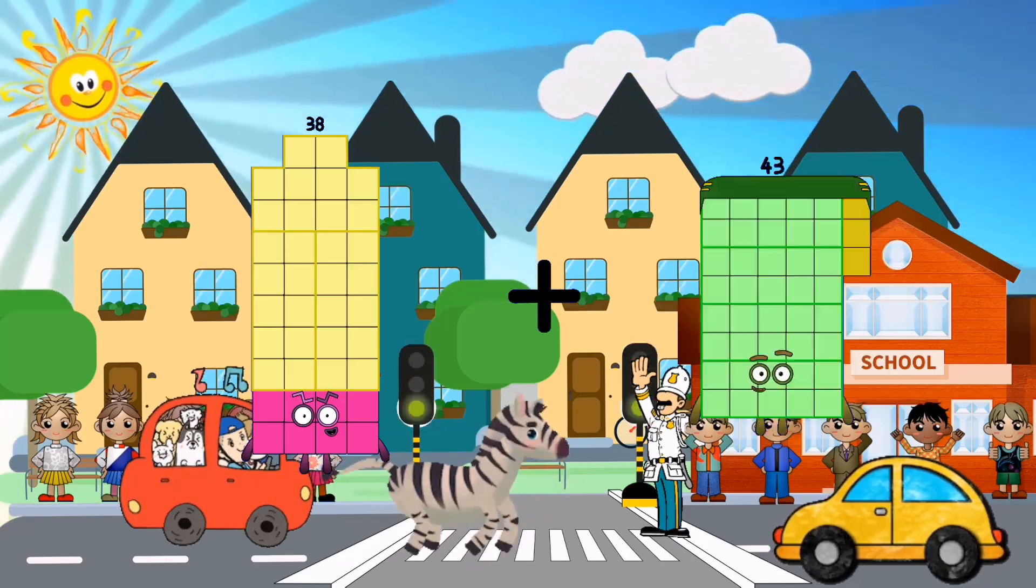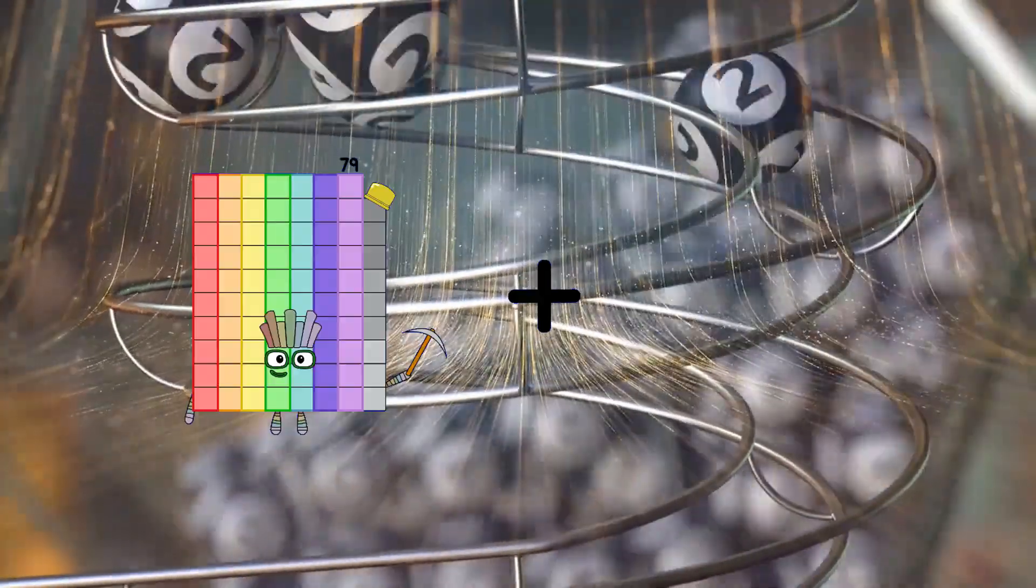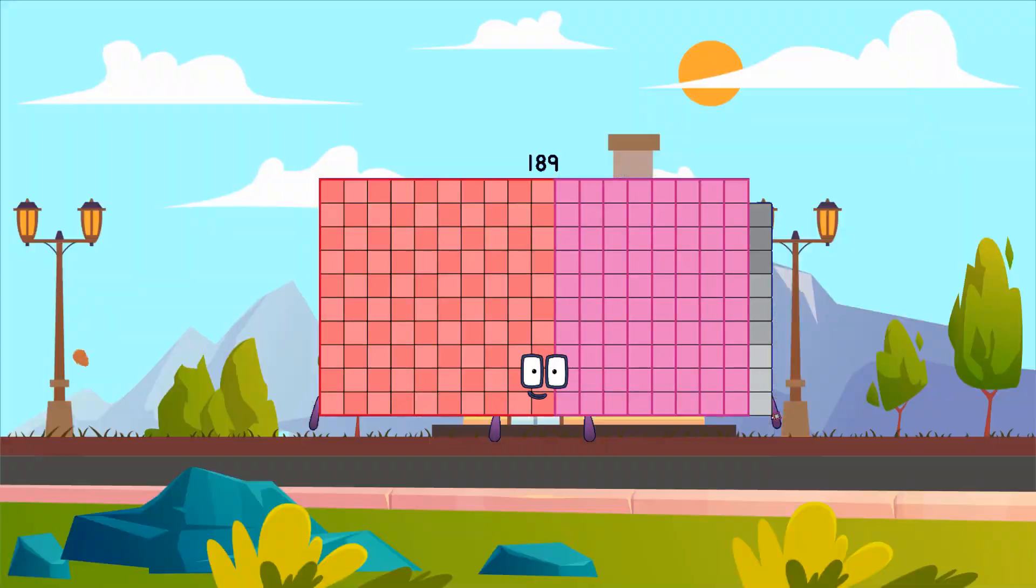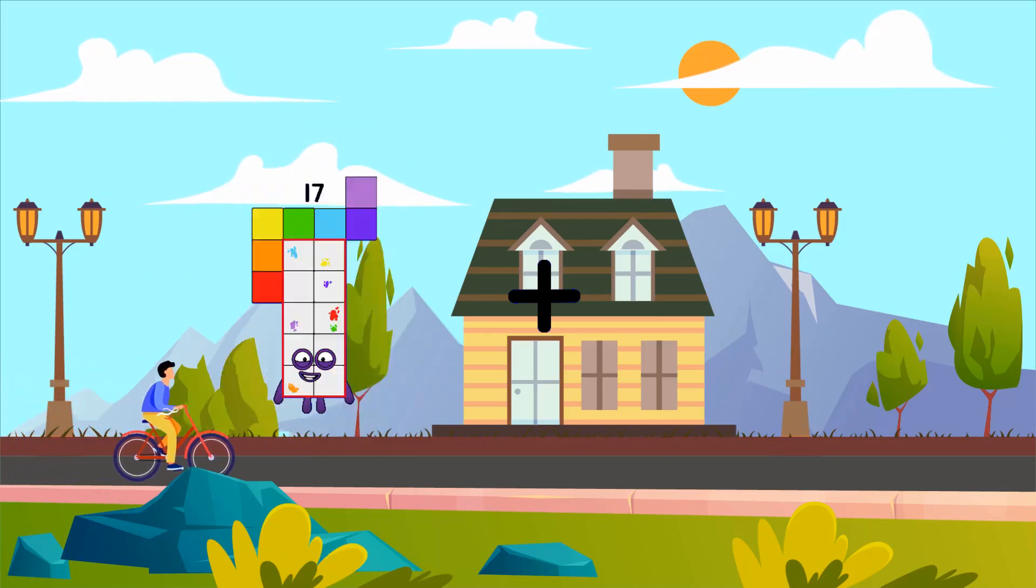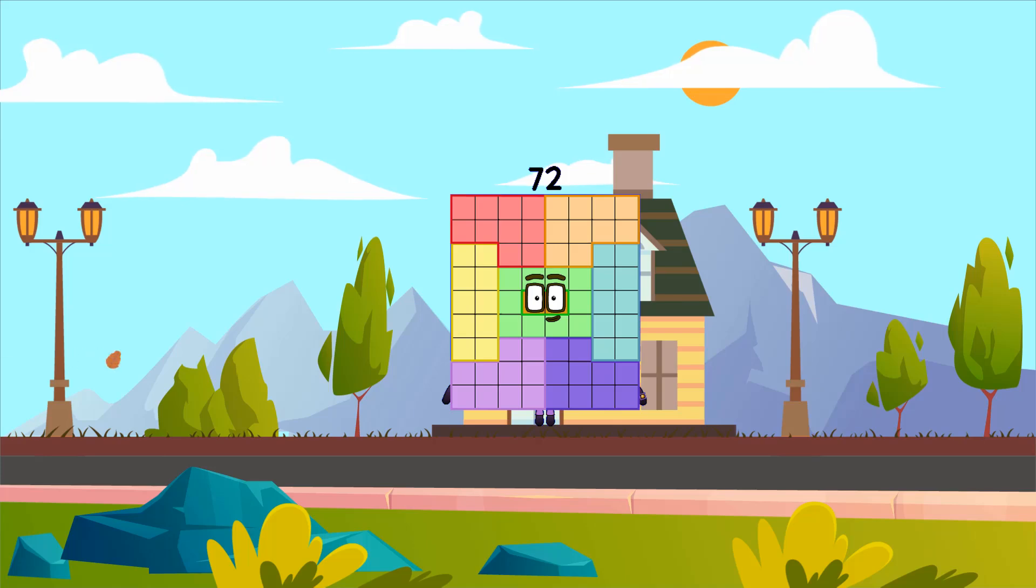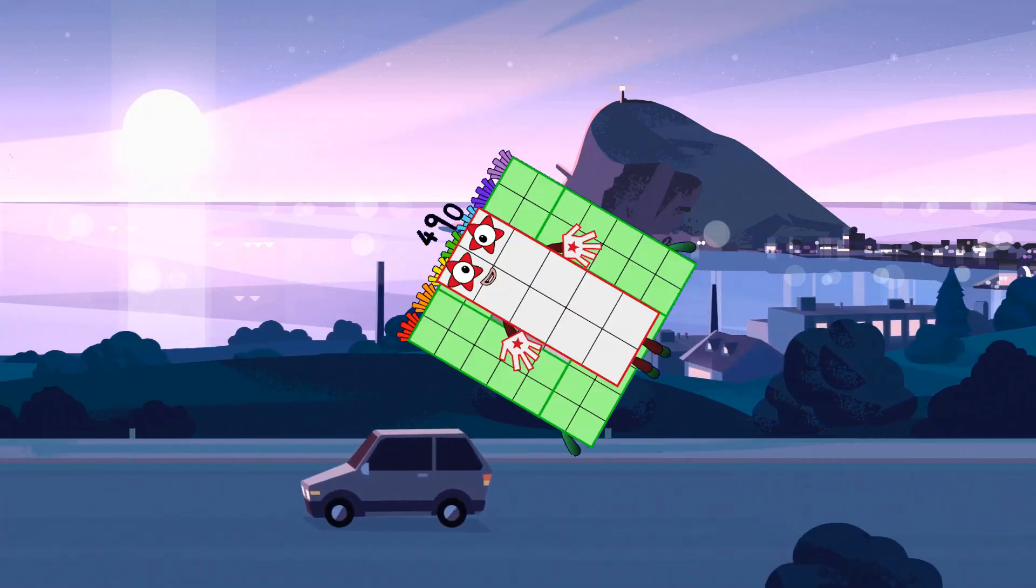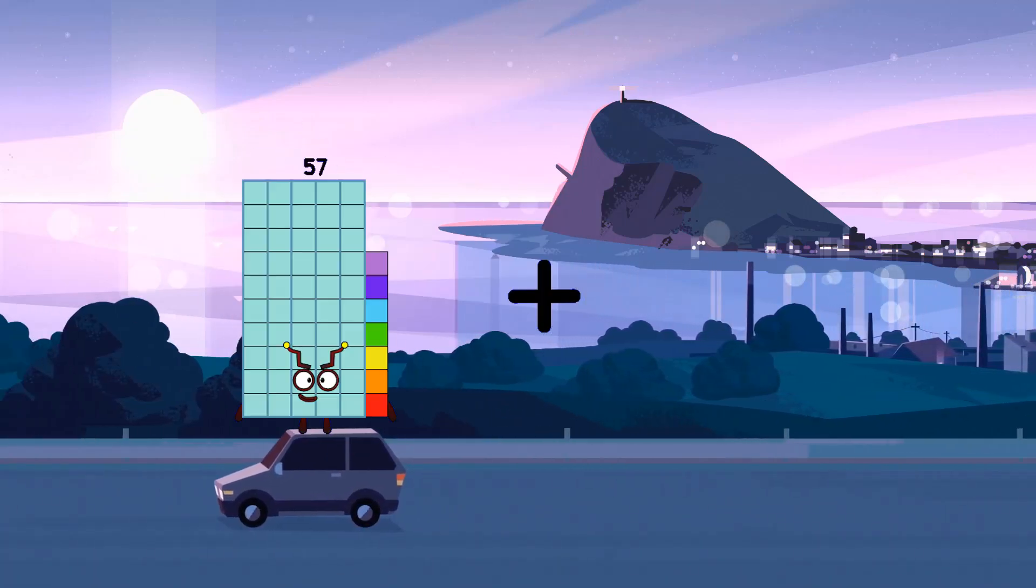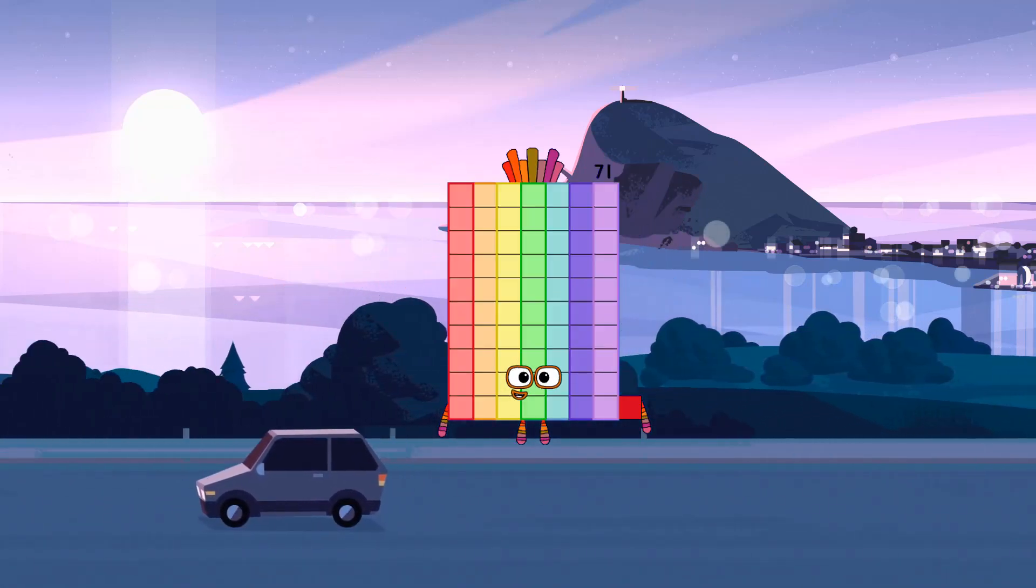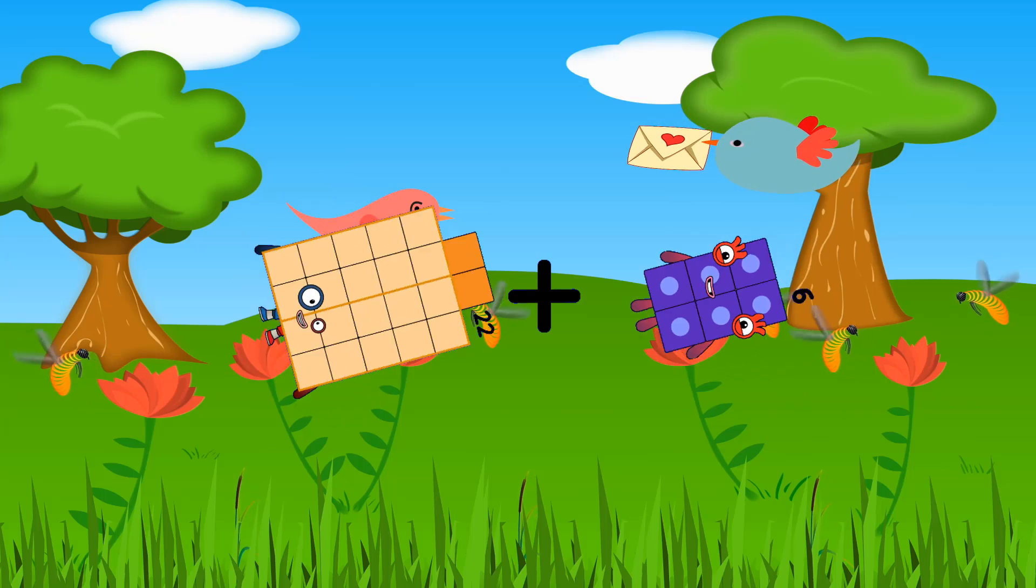38 plus 95 equals 133. 89 plus 100 equals 189. 40 plus 33 equals 73. 49 plus 10 equals 59. 50 plus 21 equals 71. 22 plus 6 equals 28.